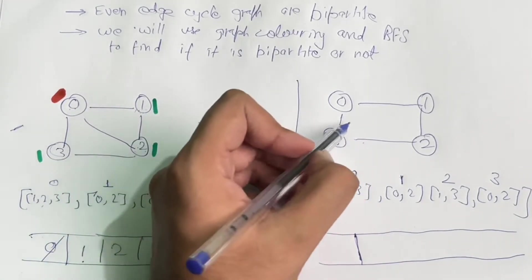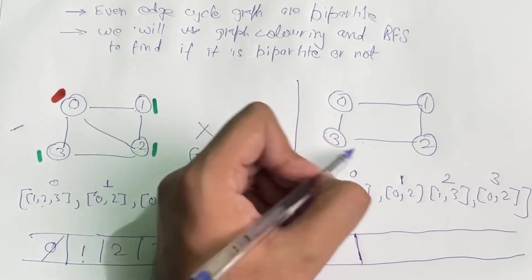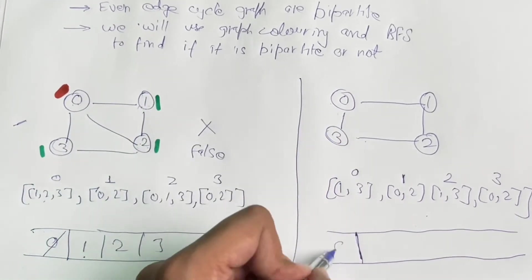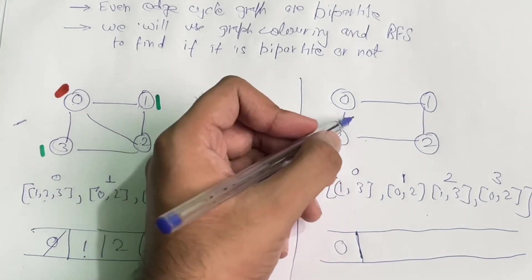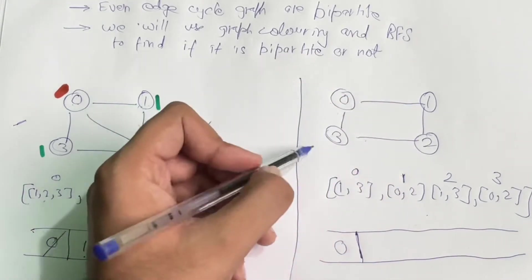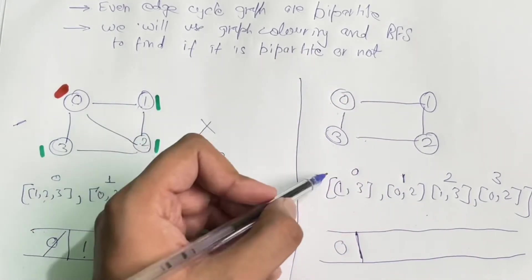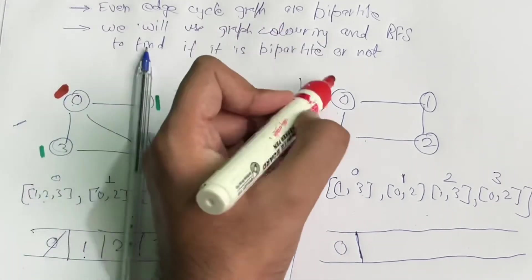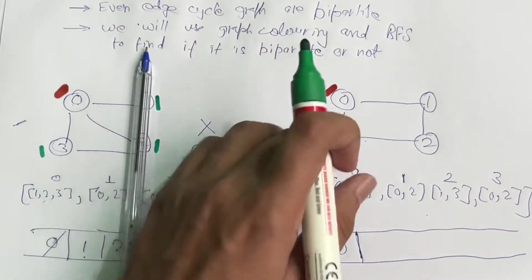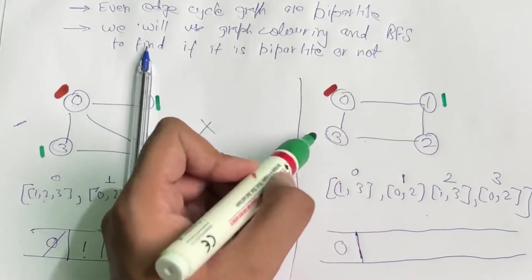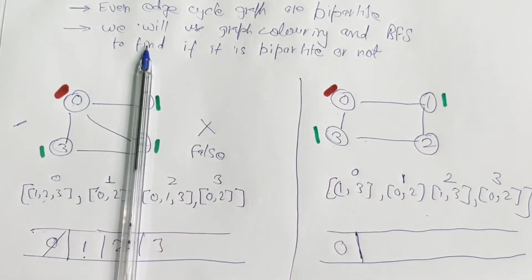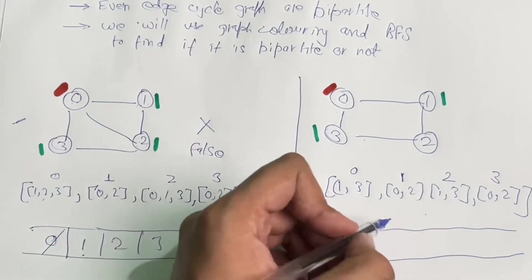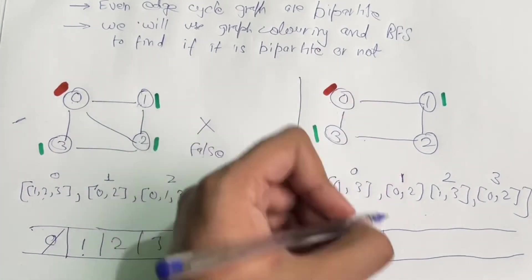Now let's look at the second graph with its adjacency list. We push node 0 into the queue. The neighbors of 0 are 1 and 3. We color node 0 as red, then fetch its neighbors 1 and 3 and color them the opposite — green. Node 0 is done, so we push 1 and 3 into the queue.